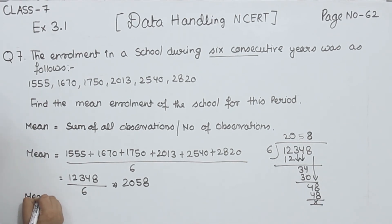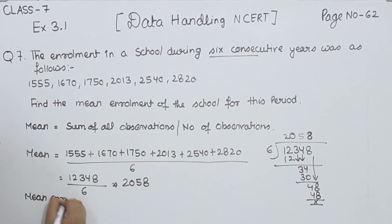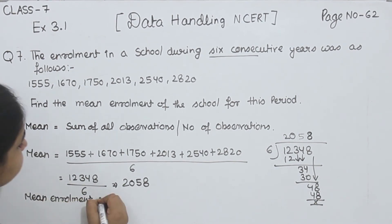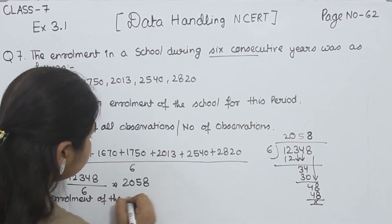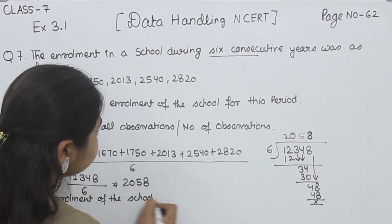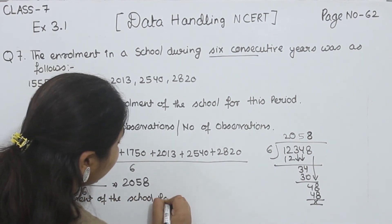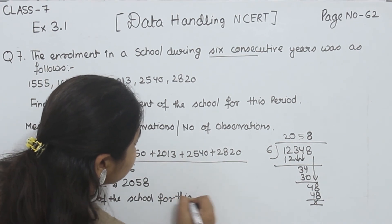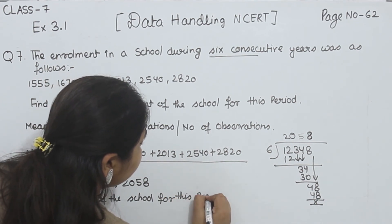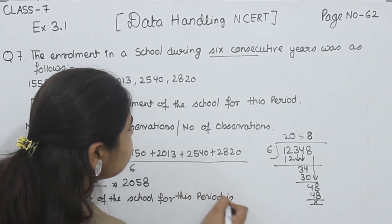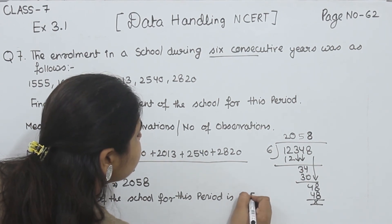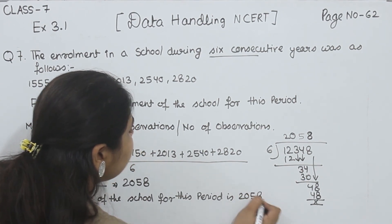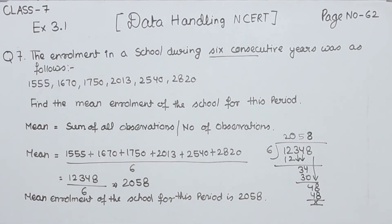We write the statement: the mean enrollment of the school for this period is 2058. This is question number 7.